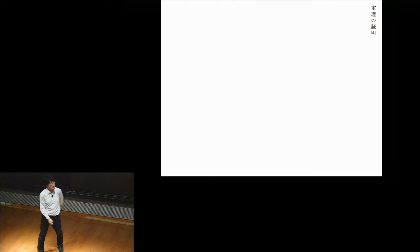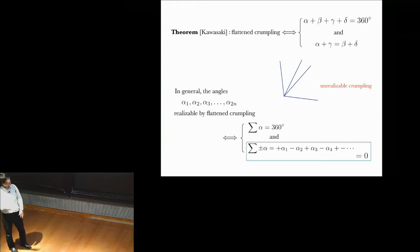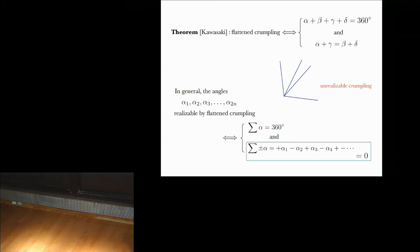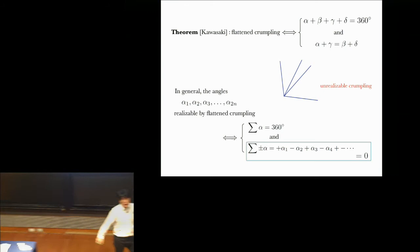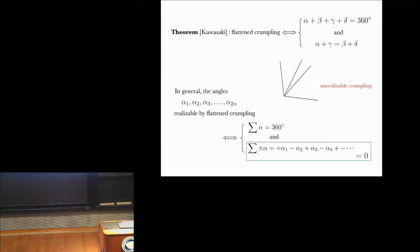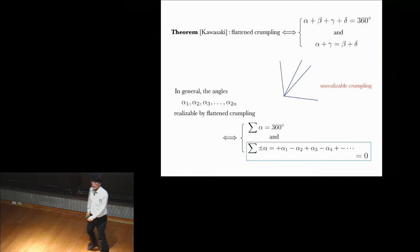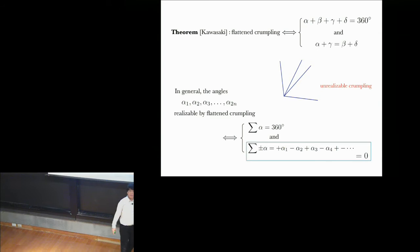In general, if you have an even number of angles coming in, for example, 10, 12, and so on, if you have alpha 1, alpha 2, alpha 3, all the way to alpha 2n, that's the angles that come in, meet together, they are realizable by flattened crampling, if and only if, and this is a total, so the necessary and sufficient condition, which completely takes care of this kind of thing, if those angles must add up to 360 degrees. That's, of course, obvious. But the other condition is quite interesting. They are realizable if and only if, what the mathematicians like to call the alternating sum, plus alpha 1, that is, plus alpha 1, minus alpha 2, plus alpha 3, minus alpha 4, plus, minus, plus, minus, closes to exactly 0.